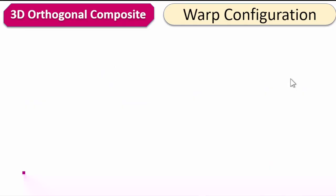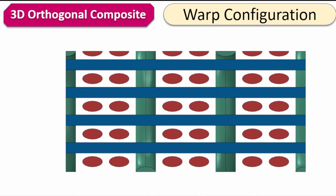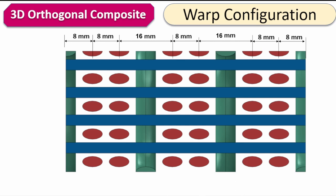Similarly for the warp — it will have the same yarn cross-section and the same length. In terms of distribution, this is how it will be distributed in space, with specific horizontal and vertical spacings. These are the numbers we're going to use in creating this virtual domain.